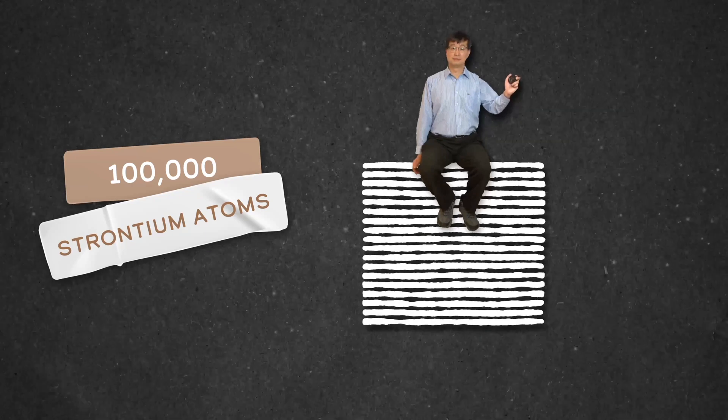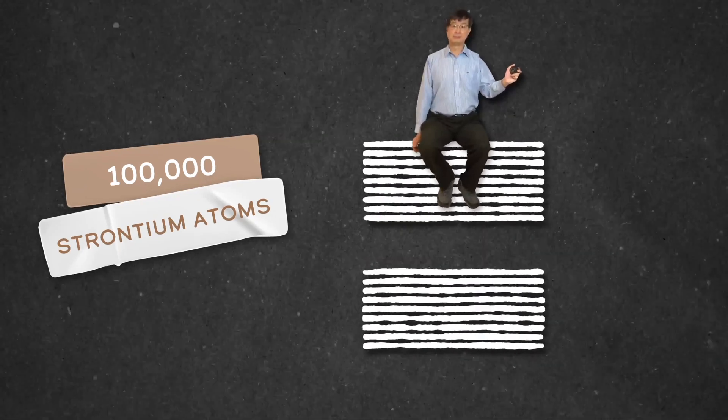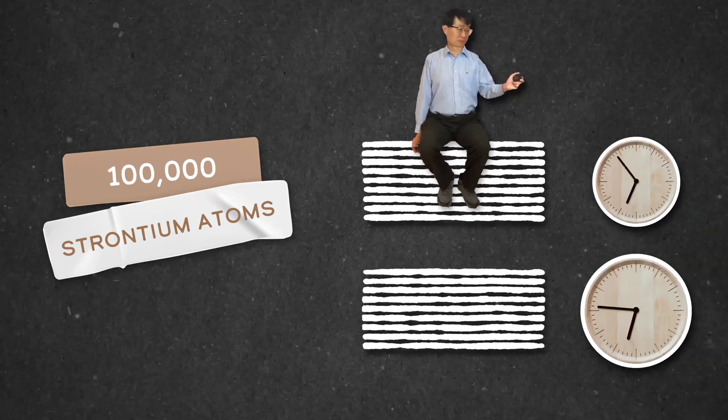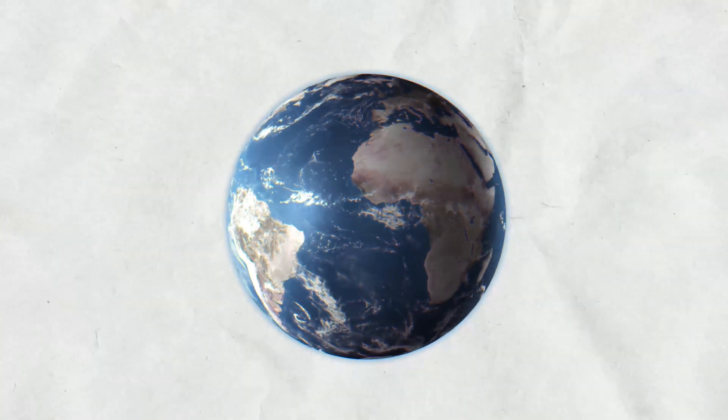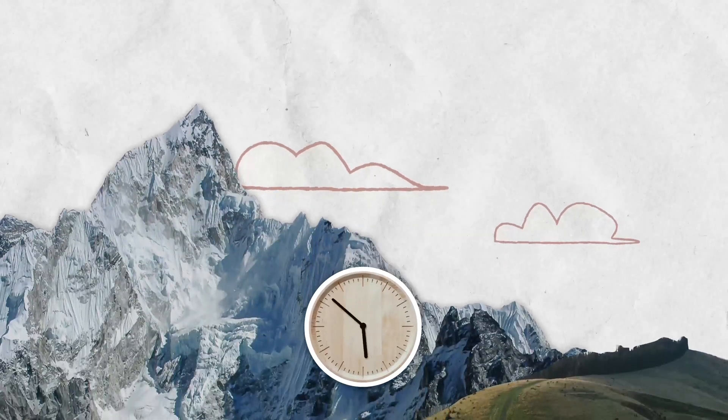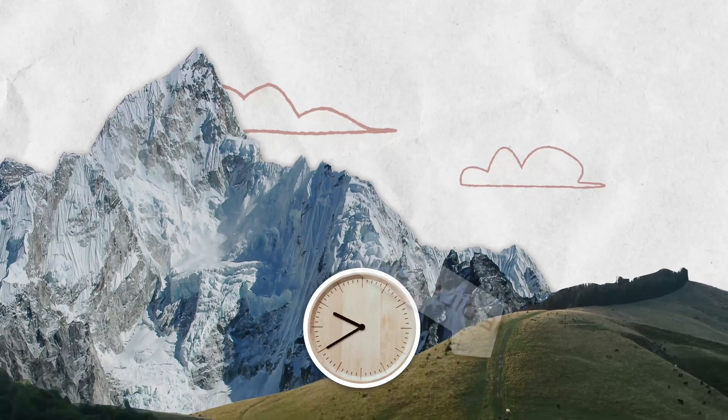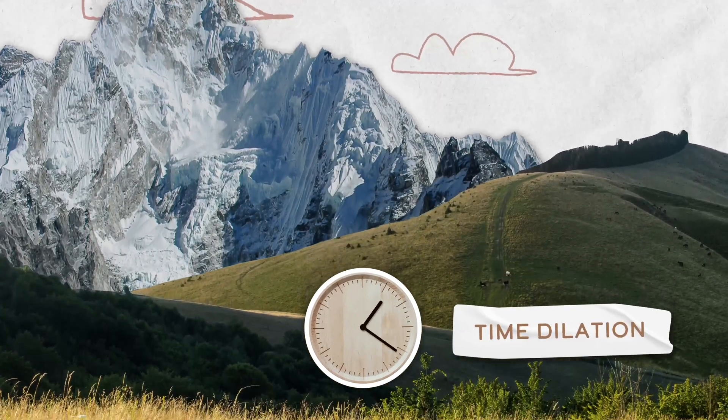The clock is so precise that when Jun's group divided that stack in two, they could measure how time was passing in the top of the stack and the bottom of the stack and see a difference. Gravity slows time down. As we get closer to the center of the Earth, time slows down. And that's a time dilation effect predicted by Einstein's general relativity.